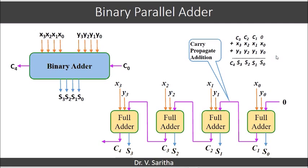The total inputs of the binary parallel adder are 9: input carry plus two 4-bit binary numbers. There are 5 outputs: S3, S2, S1, S0 as the 4-bit sum and C4 as the output carry. We can observe that there is a delay in generating these outputs because they are not all generated at the same time.